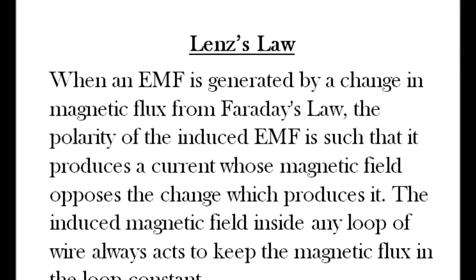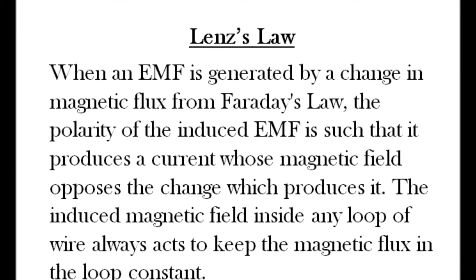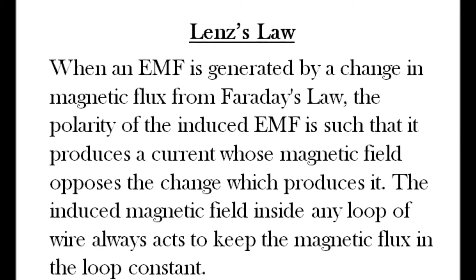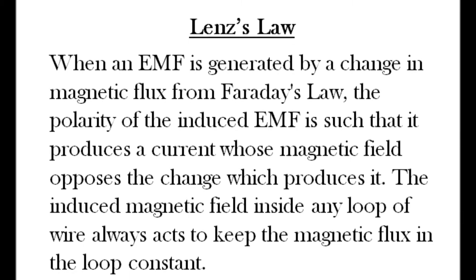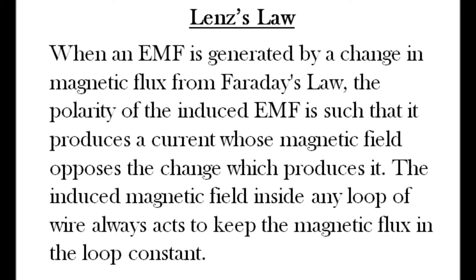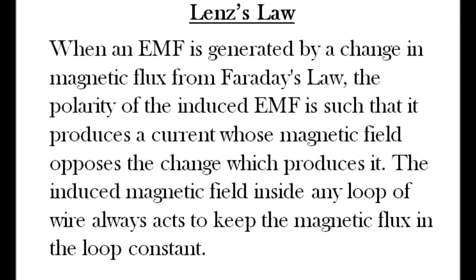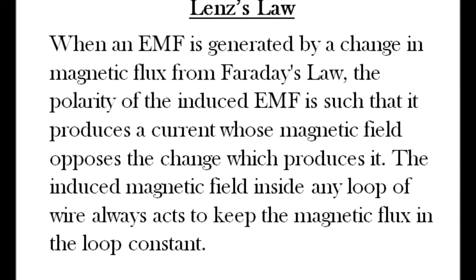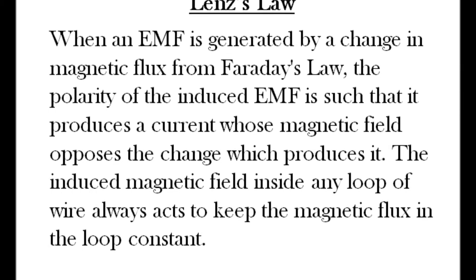When an EMF is generated by a change in magnetic flux from Faraday's law, the polarity of the induced EMF is such that it produces a current whose magnetic field opposes the change which produces it. The induced magnetic field inside any loop of wire always acts to keep the magnetic flux in the loop constant.